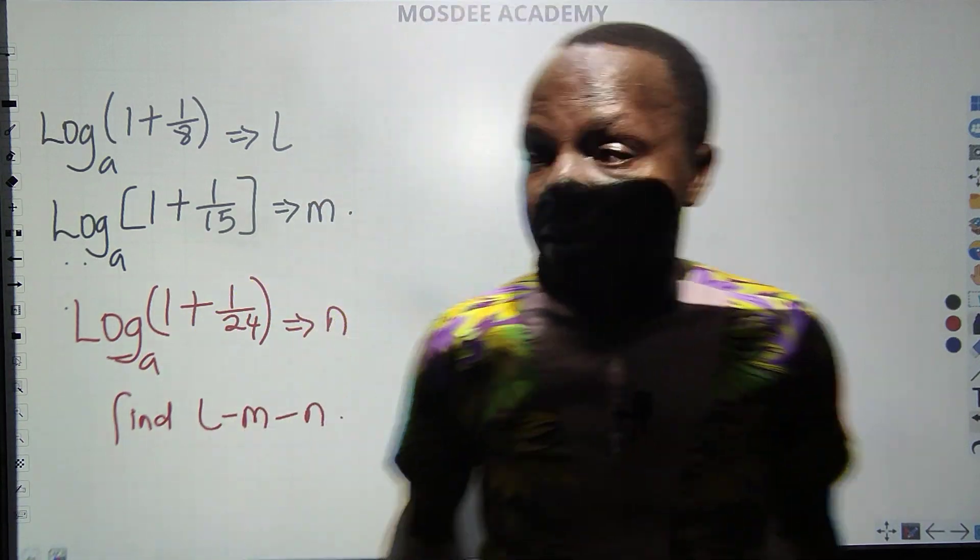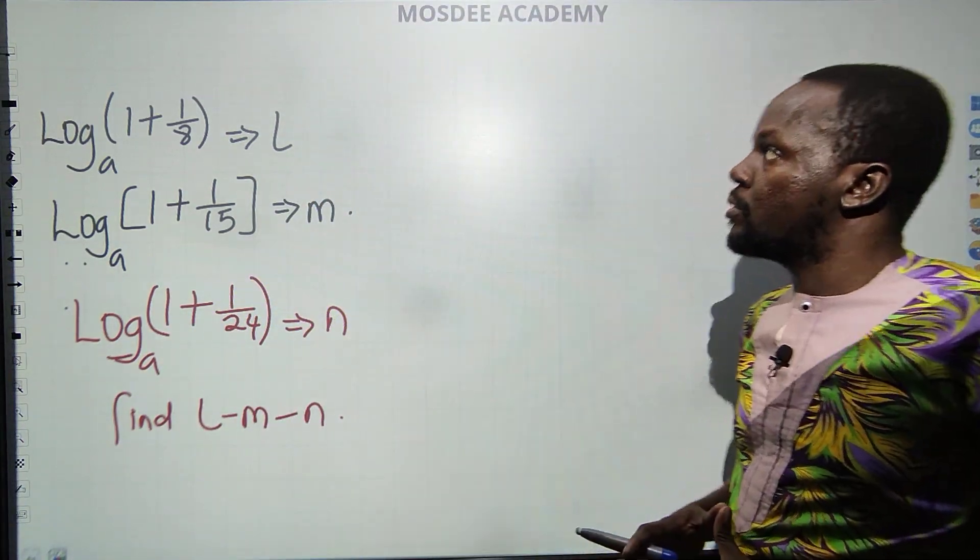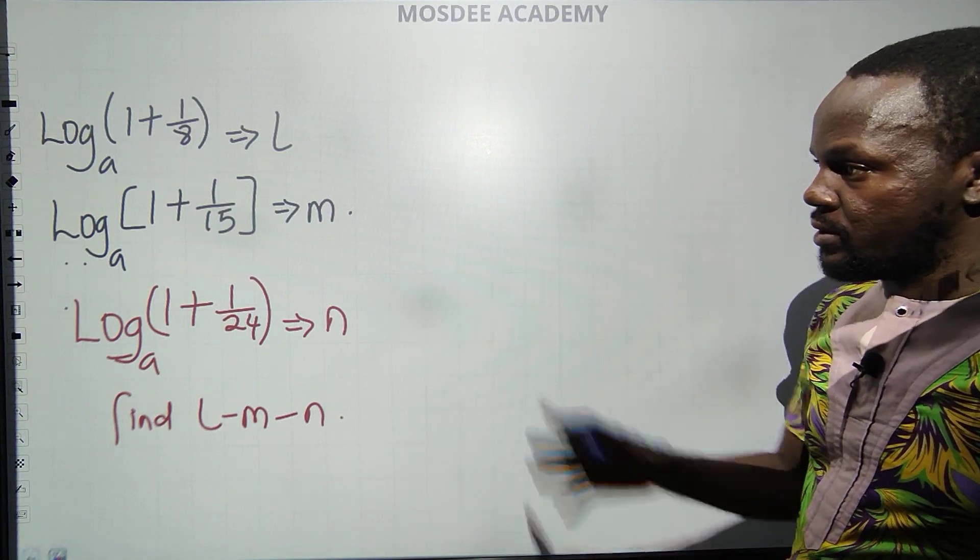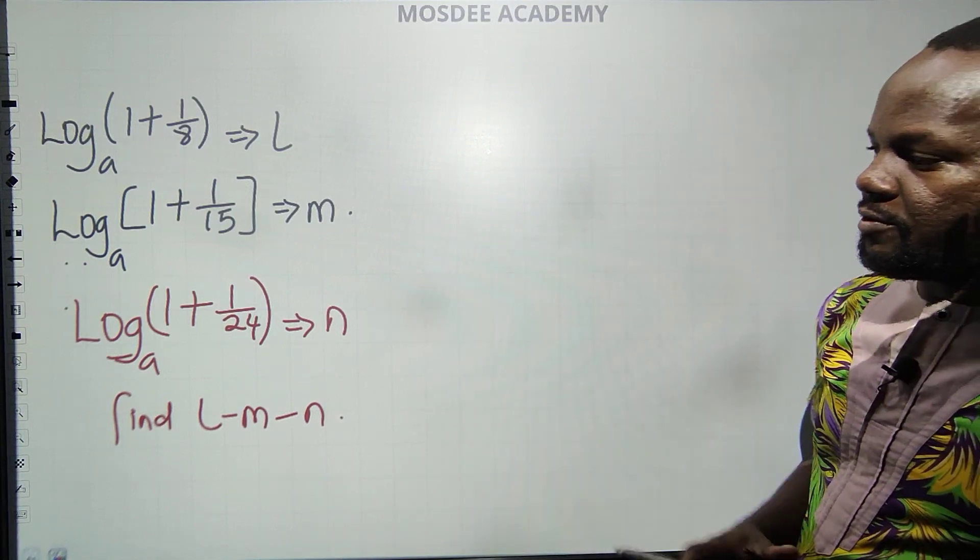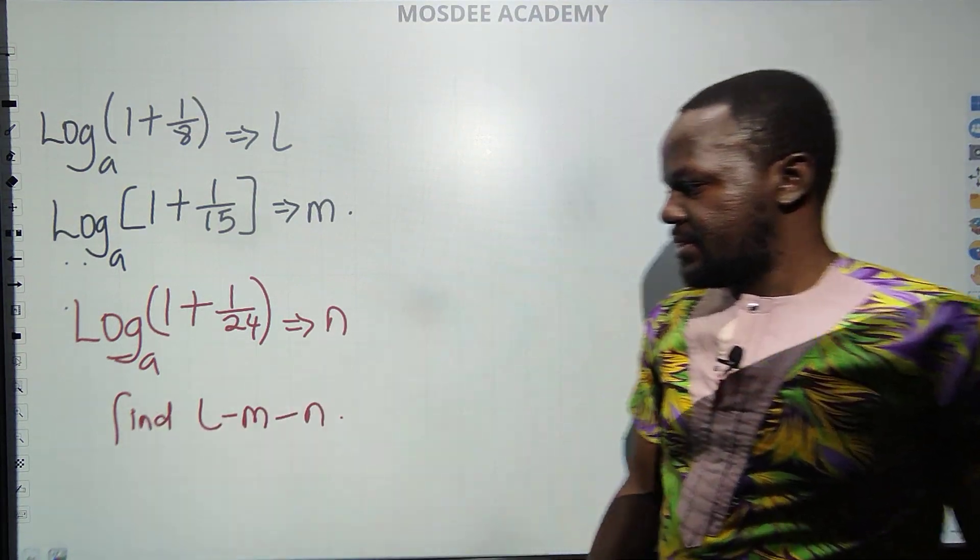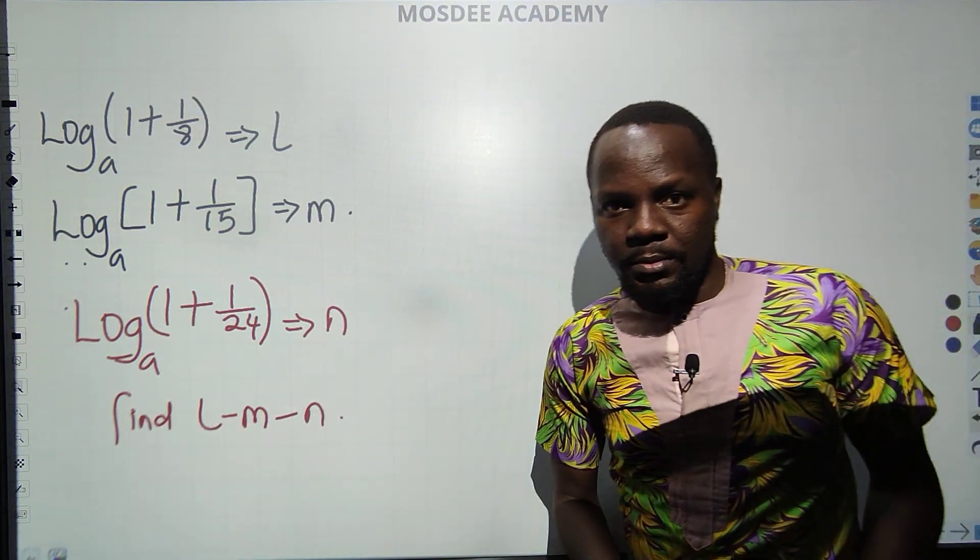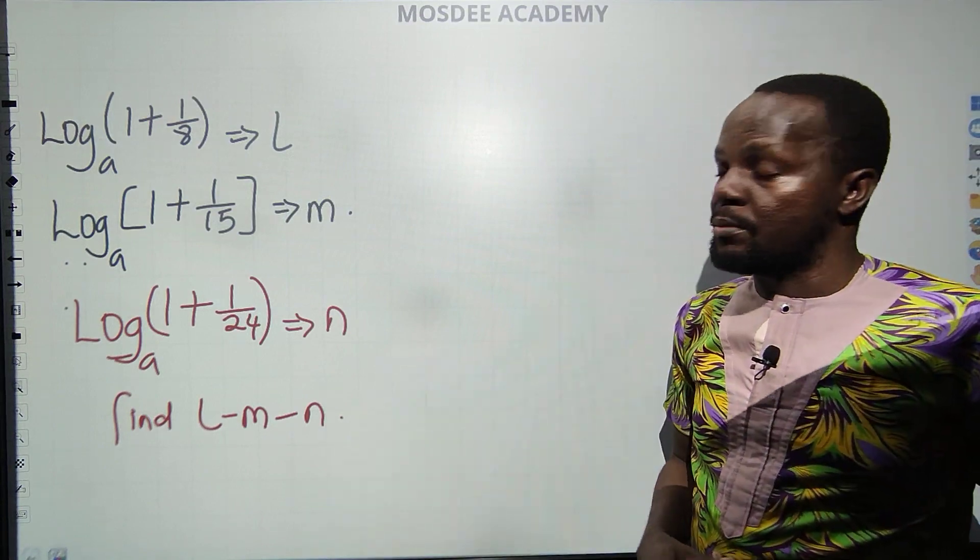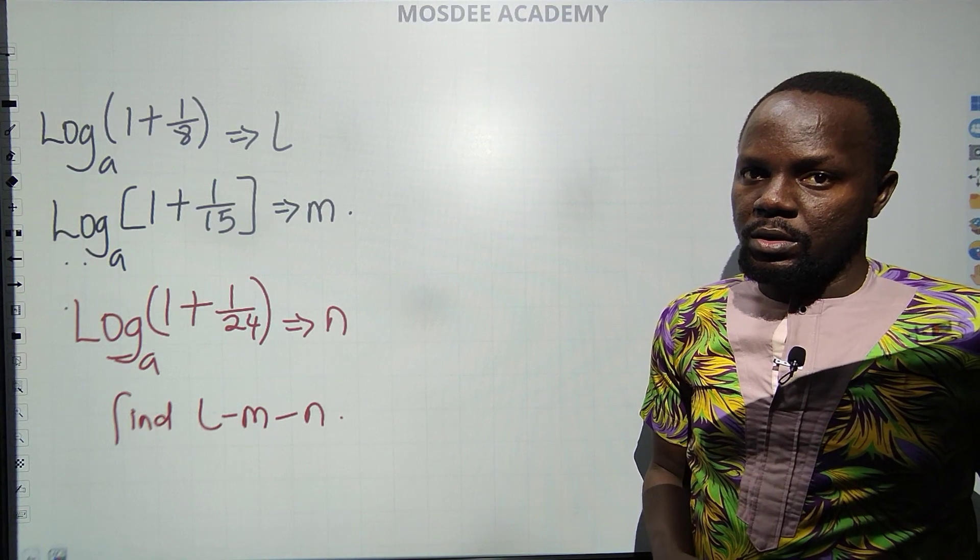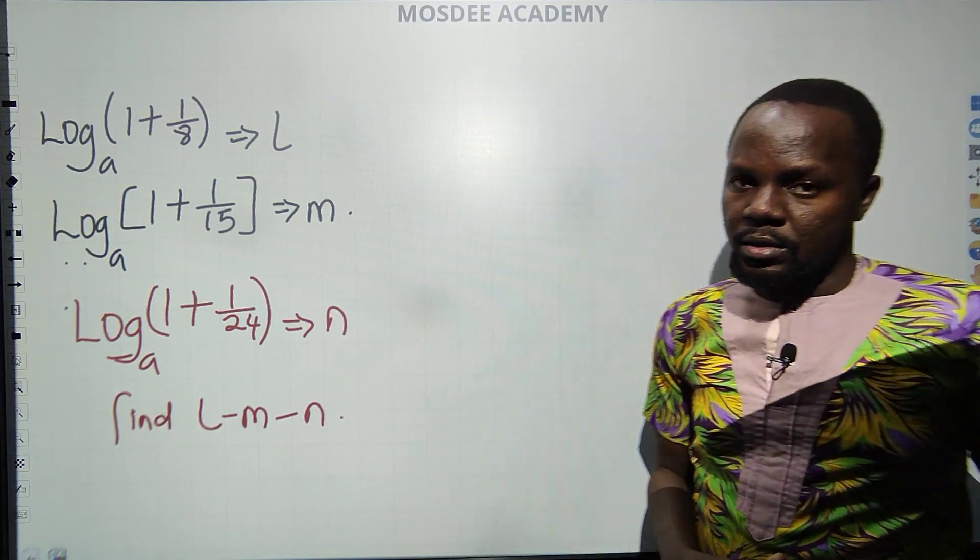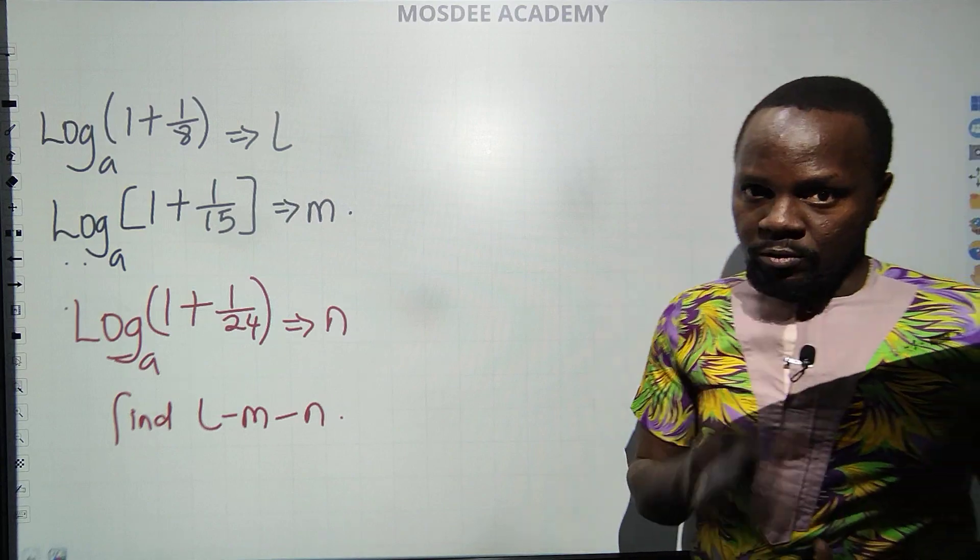Today we are going back to the basics as we have a simple request video on mathematics and logarithms. As you can see the question is here. We have to simplify or find the value of L minus M minus N. To understand this question, you have to understand the basic log rule. When I say the basic log rule, that is log A plus B equals log AB, log A minus B equals log A over B.